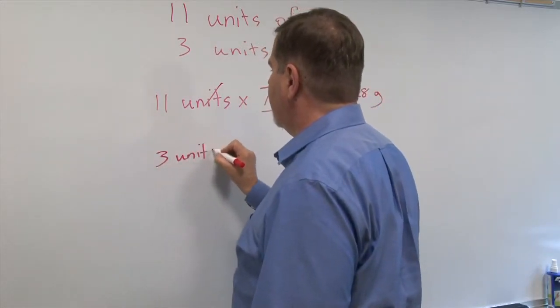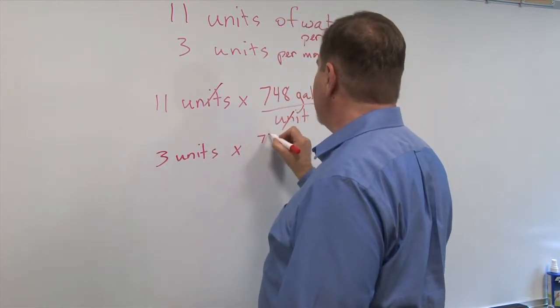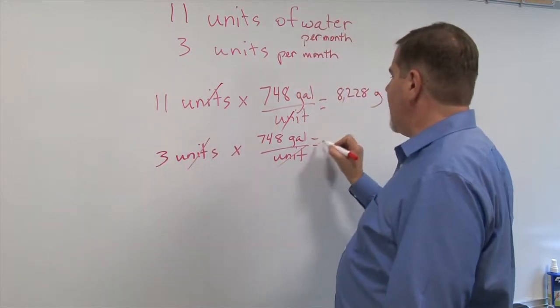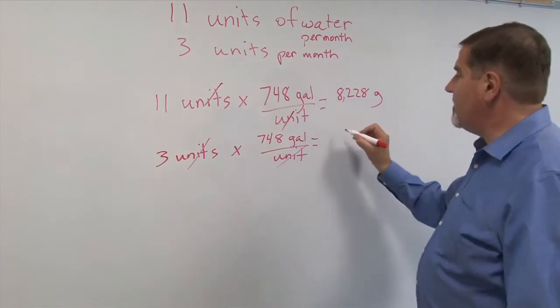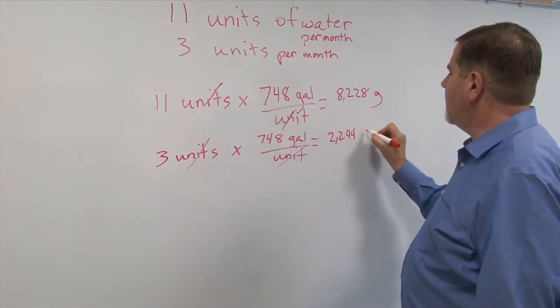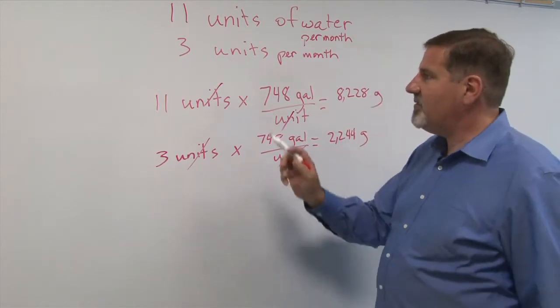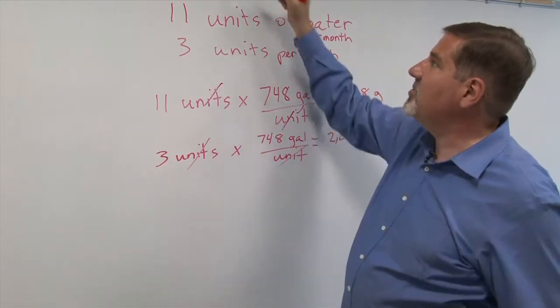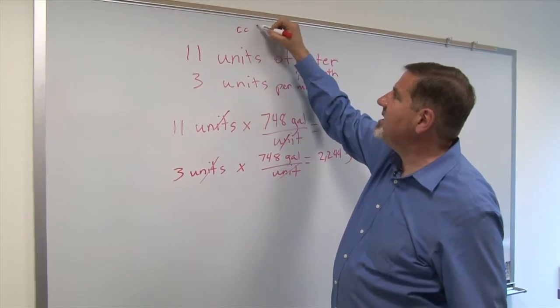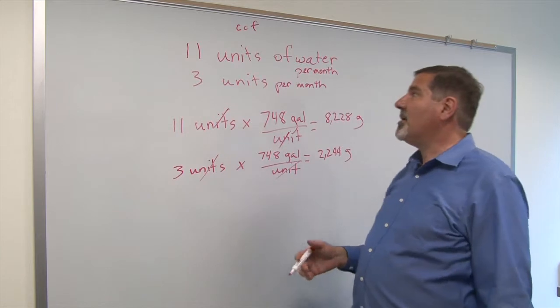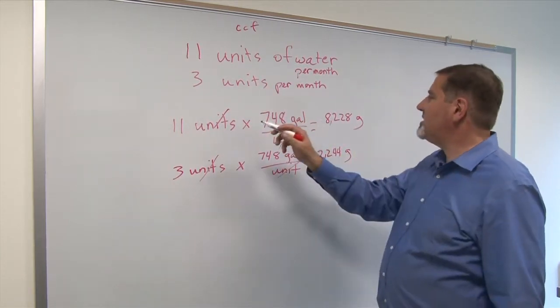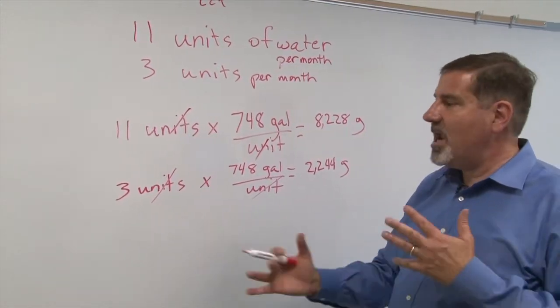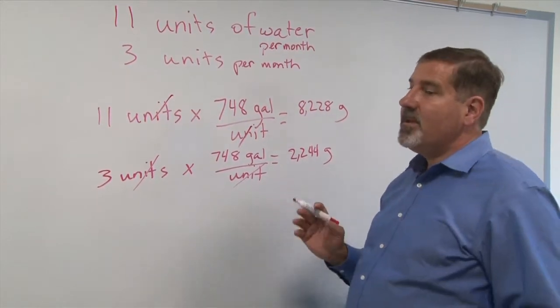Next we'll do the same thing for 3 units times the exact same conversion: 748 gallons per unit. We'll cancel units and do the math, and that comes to 2,244 gallons. We've taken this term called a unit, which you'll find on your water bill (also sometimes mentioned as CCF, which is 100 cubic feet of water), and we've just said if you have 11 units of water, that's equivalent to 8,228 gallons of water. We haven't changed the actual physical amount of water.